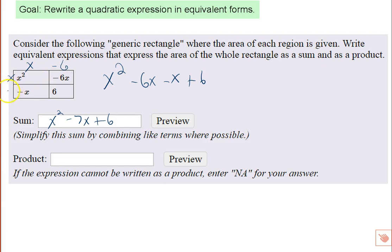And then this last dimension here, x times something is minus x, or minus 1x, so this must be minus 1. So now I have the dimensions of this rectangle.